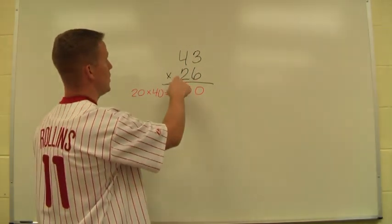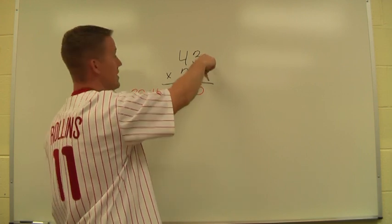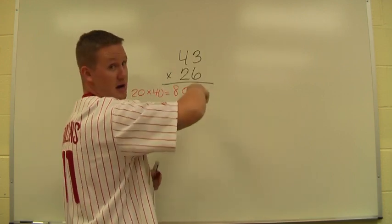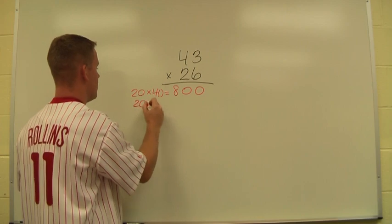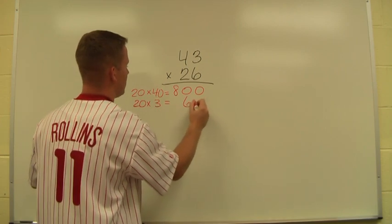Then I go use my 20 again. This time I'm multiplying it times 3. Since 3 is in the ones column, it's just 3. So 20 times 3 is what I'm thinking in my head, which gives me 60.